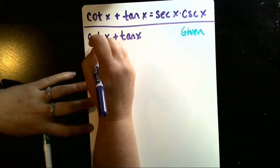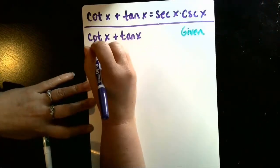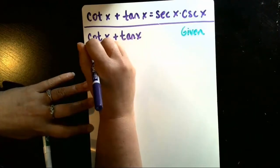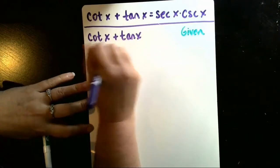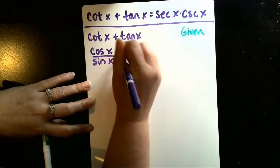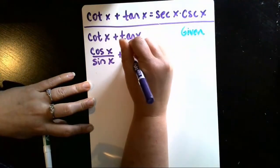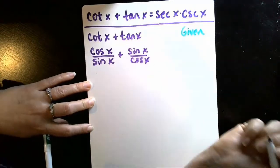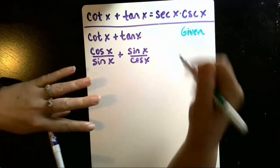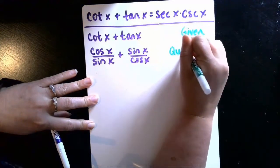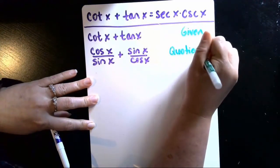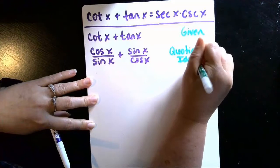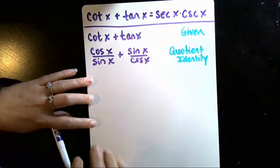So I could do that with a quotient identity. Cotangent is the ratio of the cosine divided by the sine, and tangent is the ratio of the sine divided by the cosine. So I used quotient identity in order to do that.